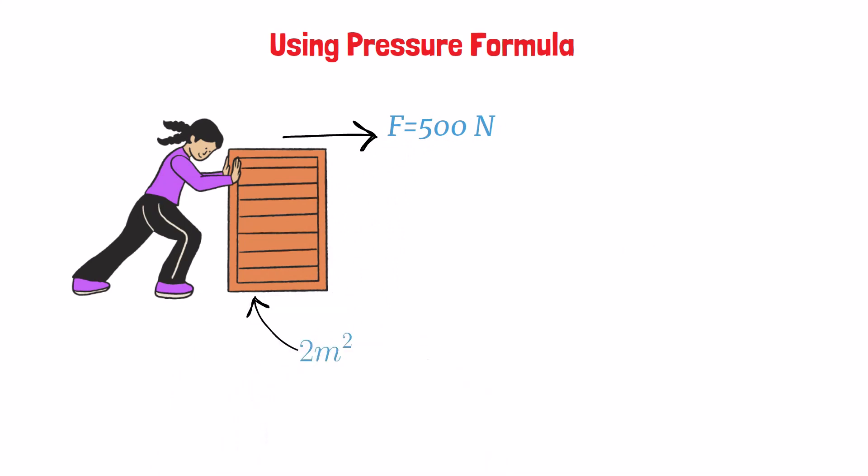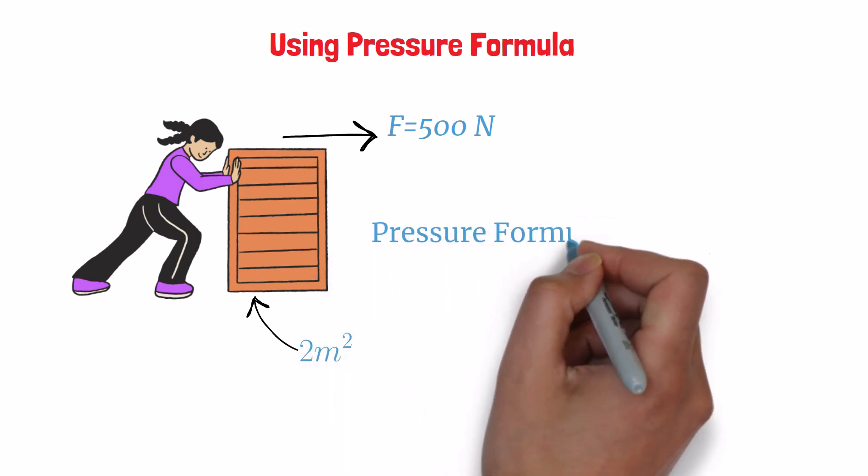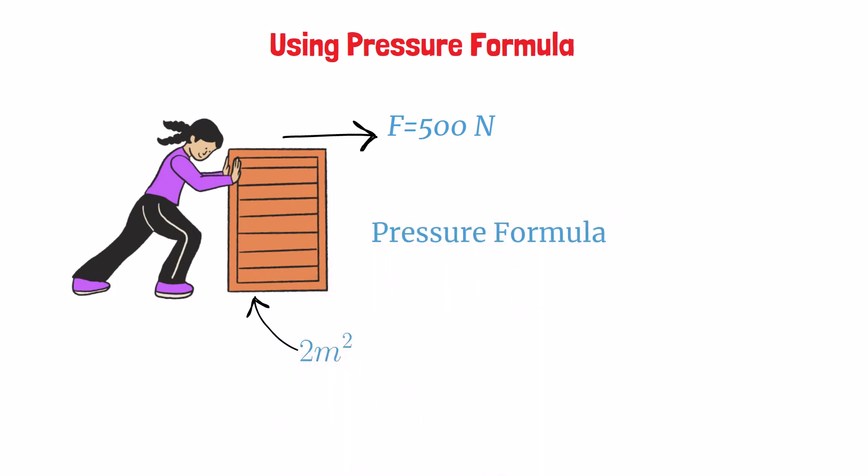Substituting the values, we have 500 N divided by 2 m². On calculating, you get pressure P equals 250 Pascals. So you are exerting a pressure of 250 Pascals on that floor.